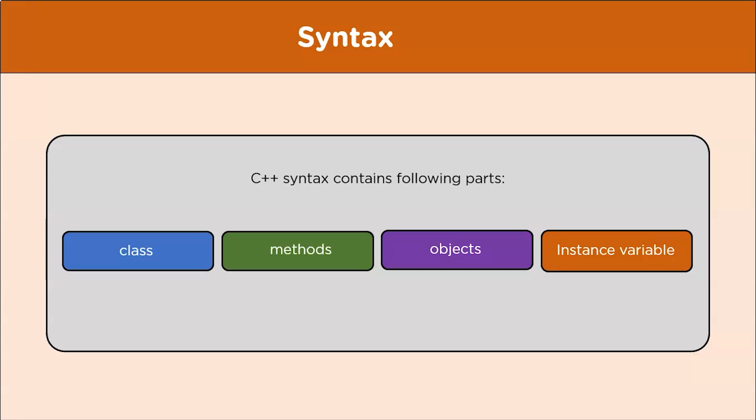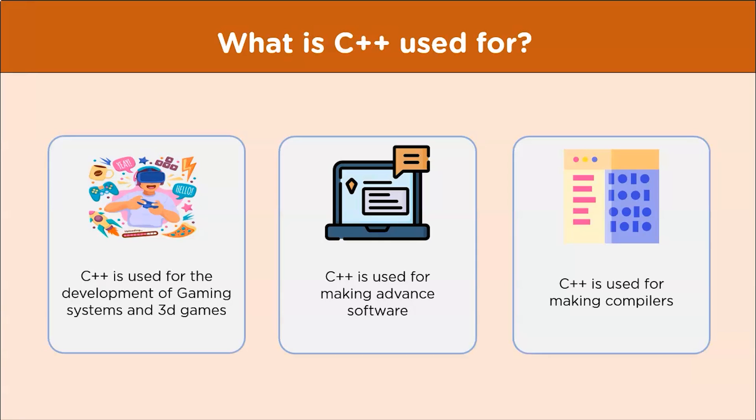Coming to objects — an object can be defined as an instance of a class. If an object is created of a certain class, it can be used to access data members and functions of that class using the dot operator. Next are instance variables — these are variables defined inside the class but outside the methods. They belong to the object, and every object has its own unique set of instance variables.